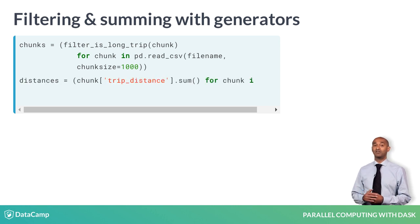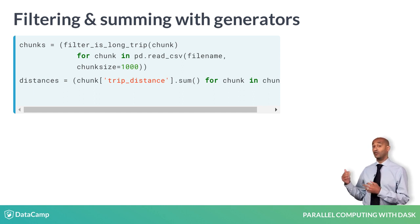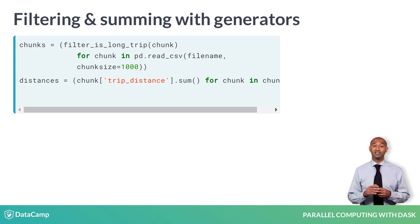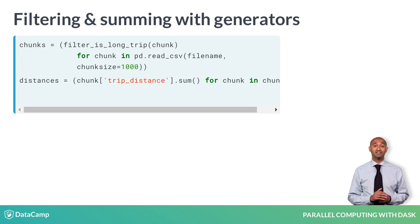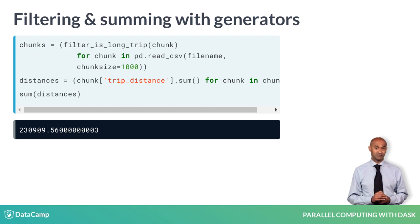We can quickly build another generator, distances, whose elements are totals of the trip distance column from each chunk. No actual computation is done until we iterate over the chained generators explicitly, in this case by applying the function sum to distances.